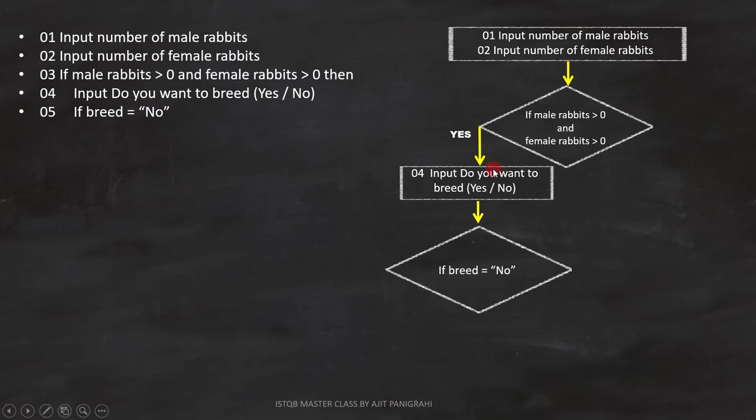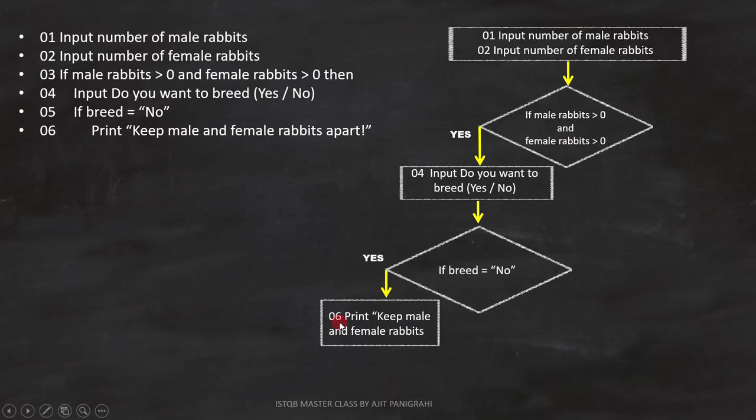If the condition becomes true, line number 6, print keep male and female rabbits apart, will be executed. This is a statement. We can represent it like this on the flowchart.